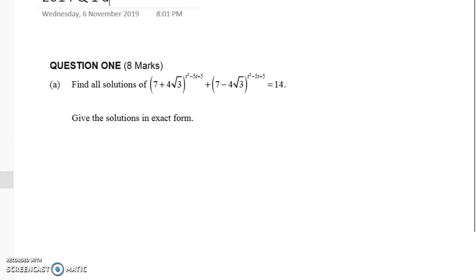Let's have a look at it where you can read it and it's a bit bigger. We have to find all of the solutions of this equation. We've got a surd thing here to the power of a quadratic plus another surd thing here to the power of that same quadratic and it equals 14, which is not usually a very special number in maths but it turns out to be quite a good number here. We have to give all of the solutions in exact form.